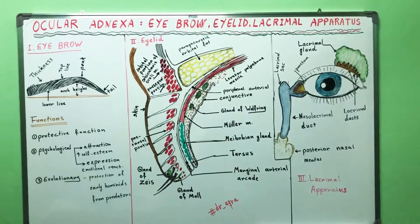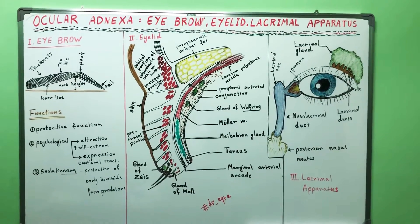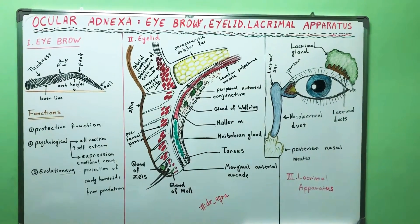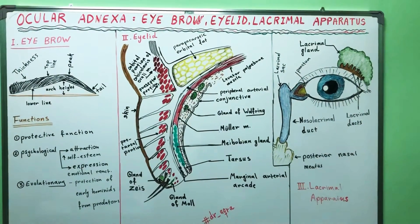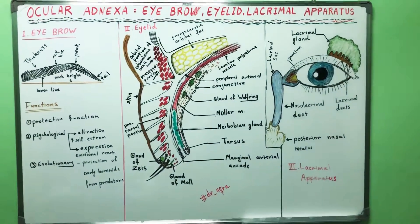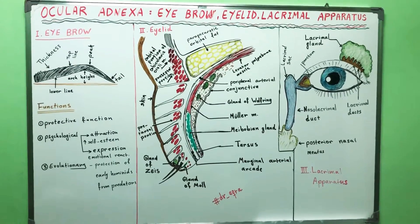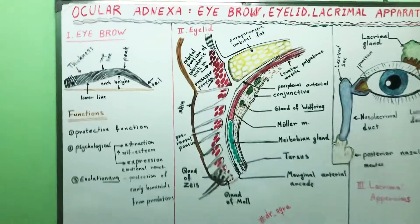Ocular adnexa involves visual accessory structures including the eyebrow, eyelid, lacrimal apparatus, conjunctiva and eyelashes. Let's start with the eyebrow.